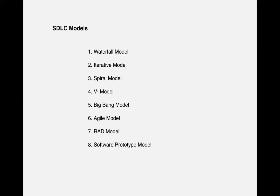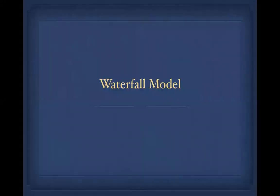The different SDLC models we have are: waterfall model, iterative model, spiral, V model, big bang, agile, RAD (rapid application development model), and software prototype model. Among all of these, the most used models in real-time software industry are the waterfall model and the agile model.